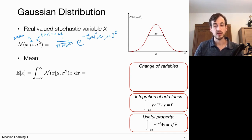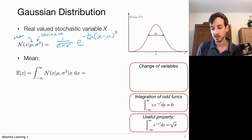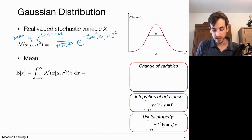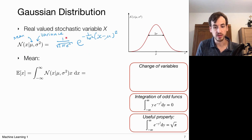We're looking at a probability distribution, and distributions are normalized to integrate to one. So if we integrate this distribution with respect to its random variable x, the entire thing should evaluate to one. That's why we have this normalization prefactor 1/√(2πσ²).